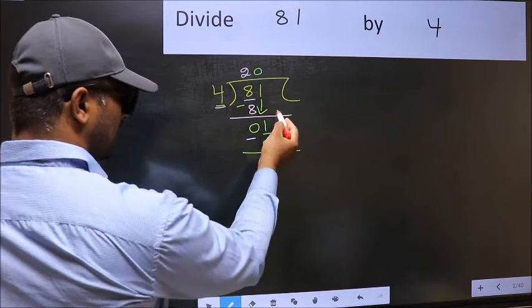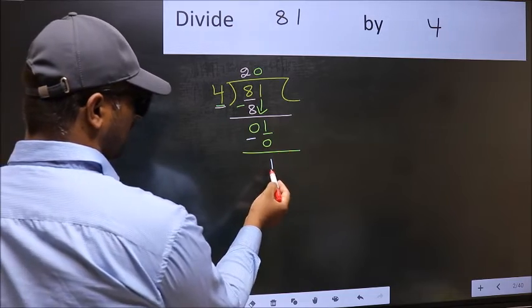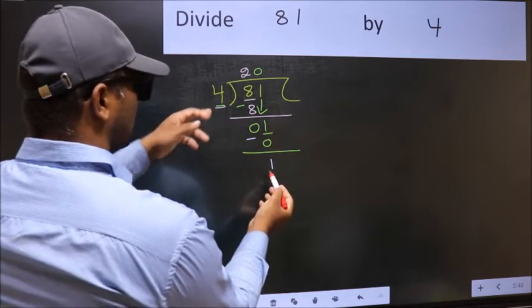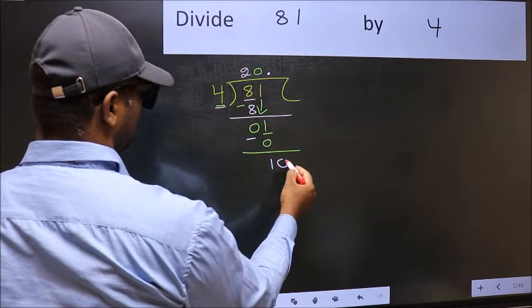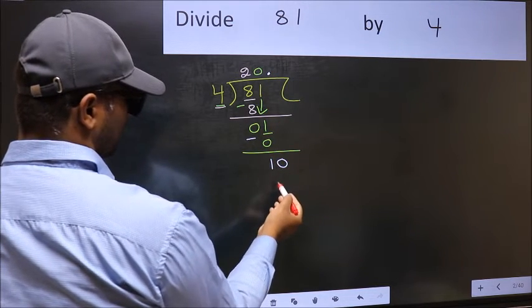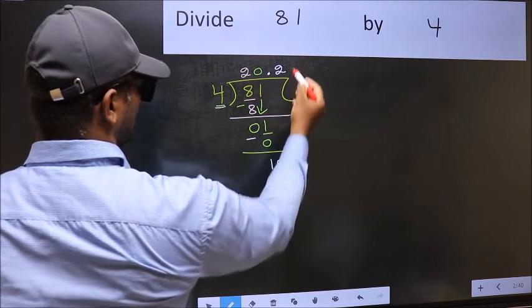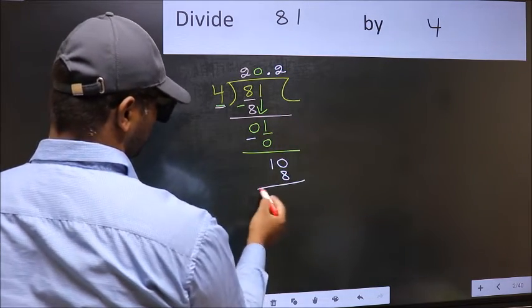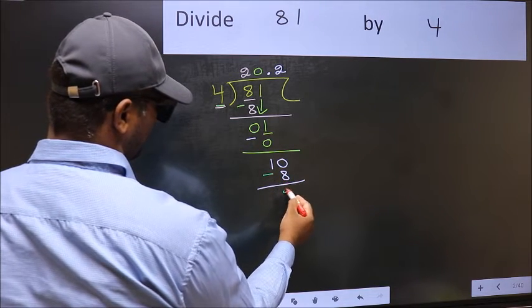Over here, we did not bring any number down, and 1 is smaller than 4. So now you can put a dot and take 0. So 10. A number close to 10 in the 4 table is 4 times 2 is 8. Now you should subtract. 10 minus 8 is 2.